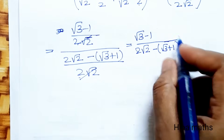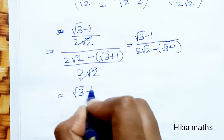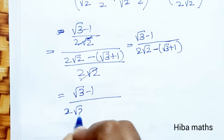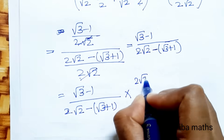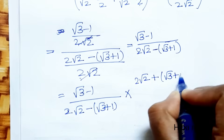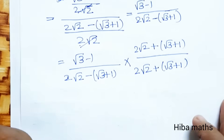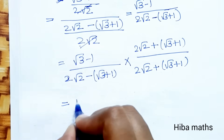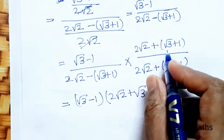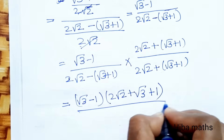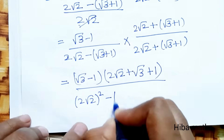To rationalize, we multiply numerator and denominator by the conjugate (2√2 + √3 + 1). So we have (√3 - 1)(2√2 + √3 + 1) divided by (2√2 - √3 - 1)(2√2 + √3 + 1). The denominator is of the form (a - b)(a + b) = a² - b², giving (2√2)² - (√3 + 1)².